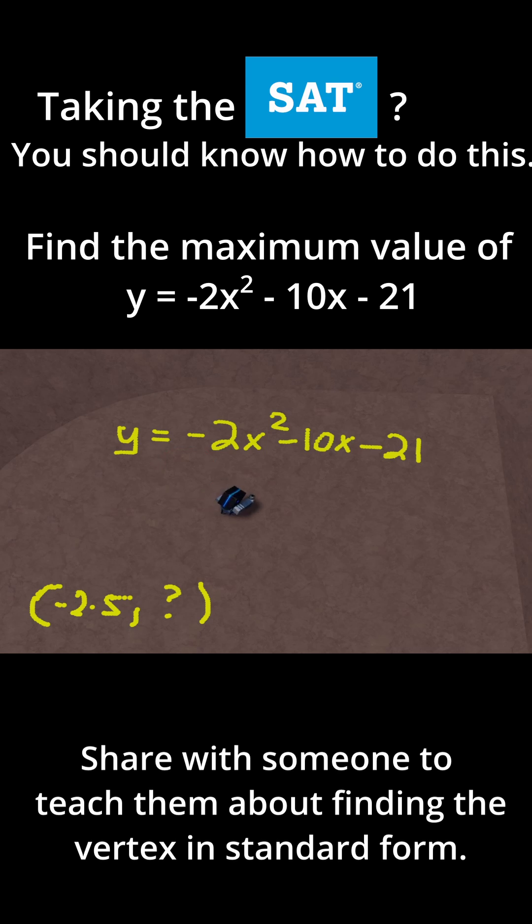So we're going to have -2 times (-2.5)², minus 10 times -2.5, minus 21. So let's evaluate this. -2 times (-2.5)², you can just put this into a calculator, and what you'll find is that it equals -12.5.